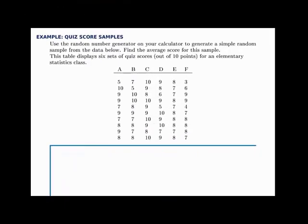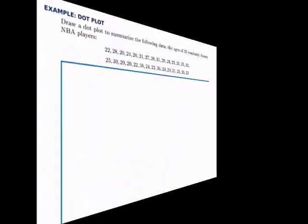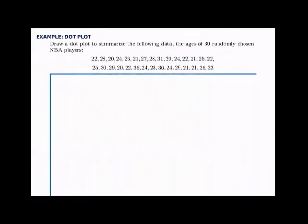In this example, we'll see how to select a simple random sample from a population — the population is a set of six quiz scores and there are 10 students. In the next example, we'll draw a dot plot. We're given data representing the ages of 30 randomly chosen NBA players. The first thing we need to do is draw an axis that covers the full range of the data.